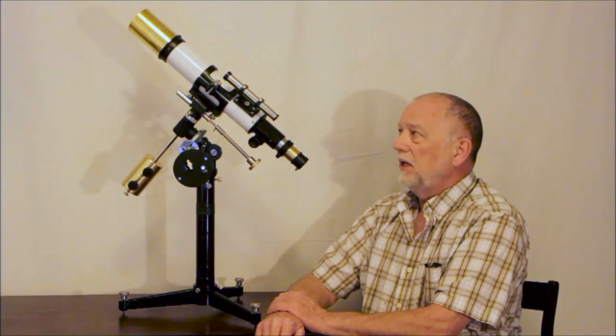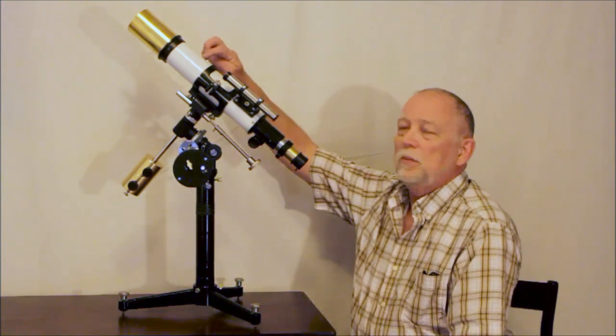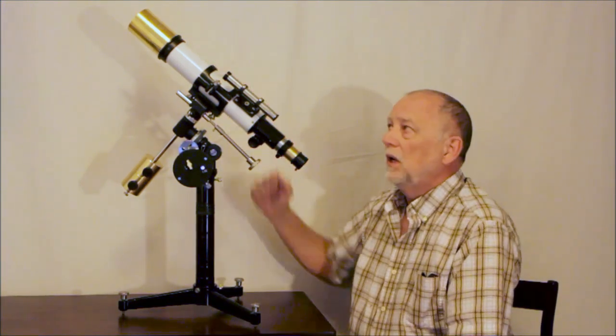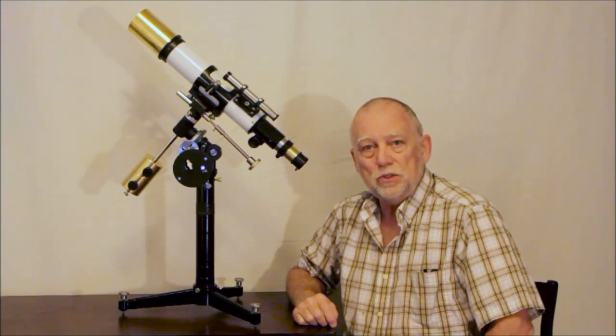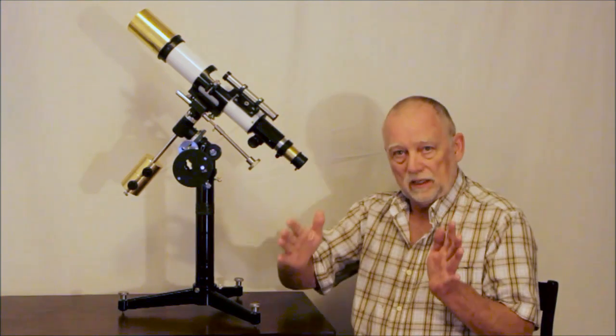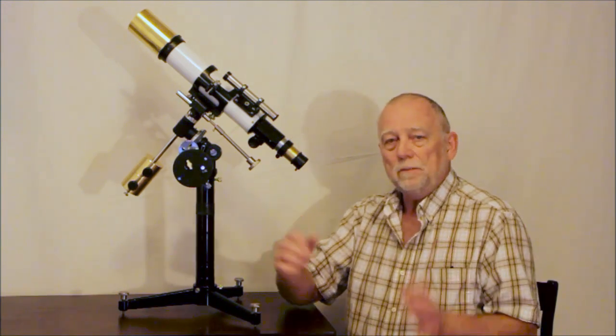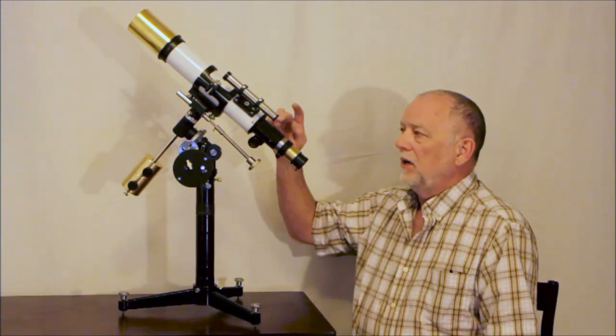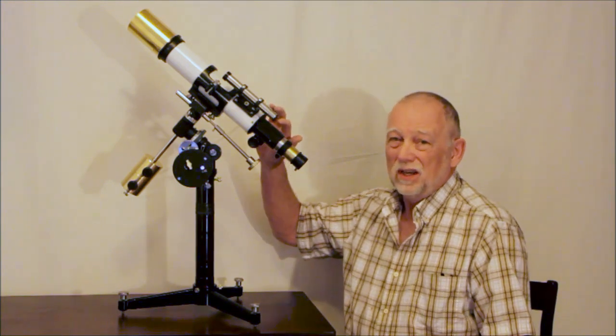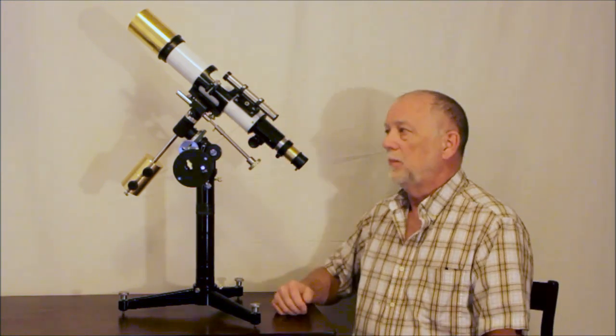So let me tell you a little bit about this. First of all, the optical tube assembly. This tube is from a 60 millimeter Unitron that was damaged, and I cut it. Of course I had to cut it. It was damaged up at the front of the tube. It was seriously dented.